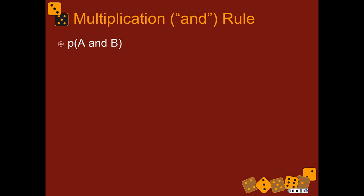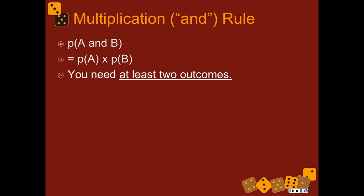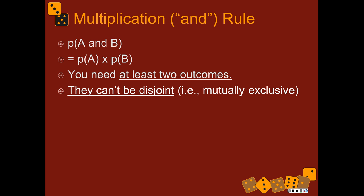So the multiplication rule says that for two events, the probability of both of them happening is equal to the individual probabilities multiplied by each other — A times B. This is for independent events. So it's important to know and be able to recognize events that are independent versus those that are dependent on each other.